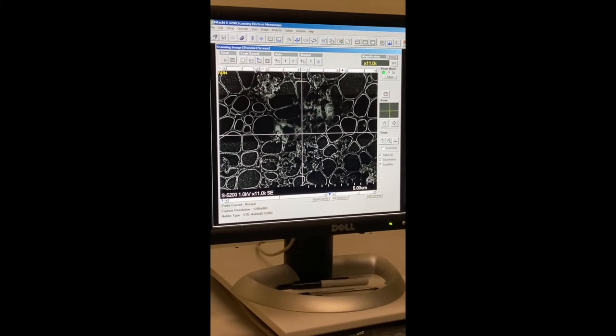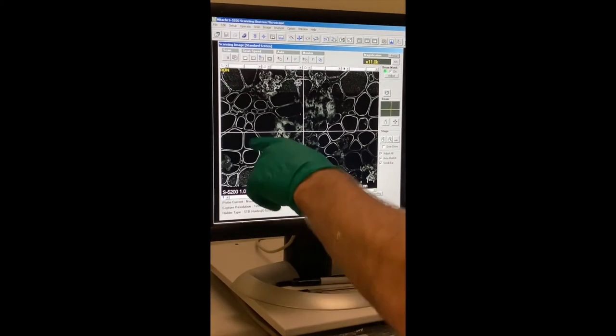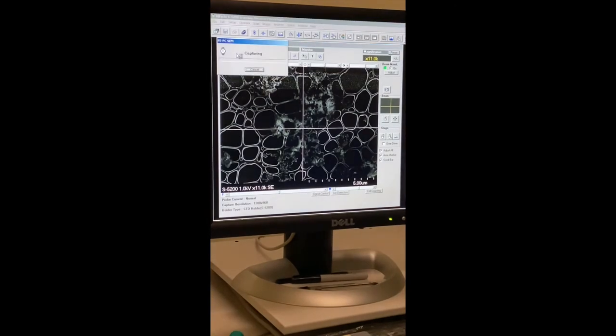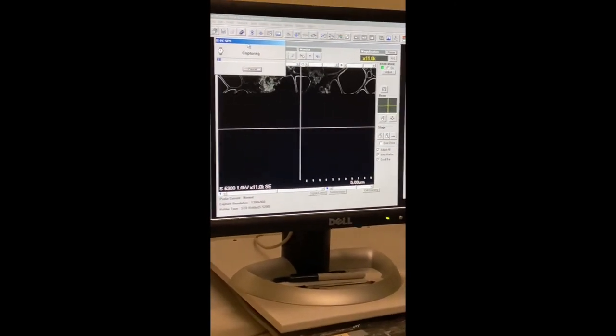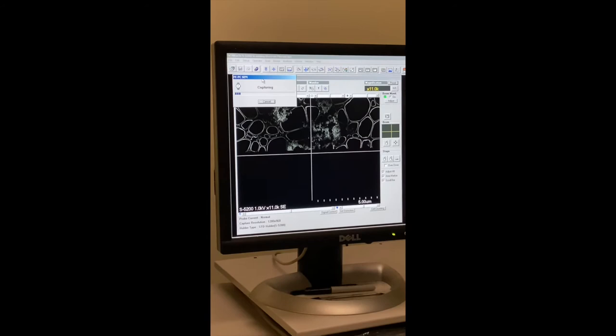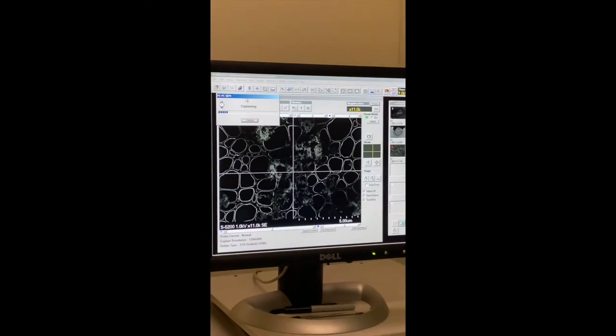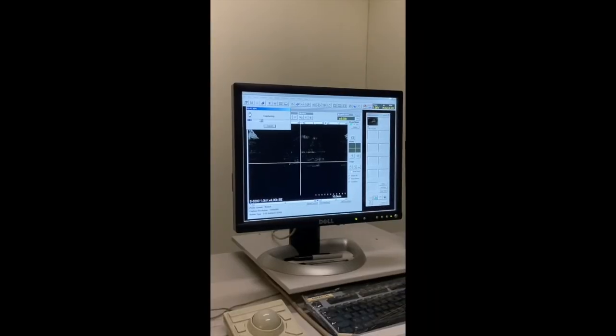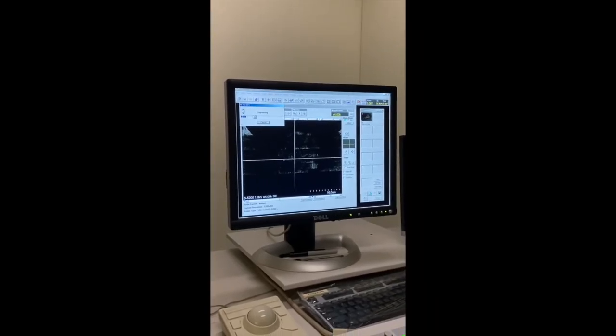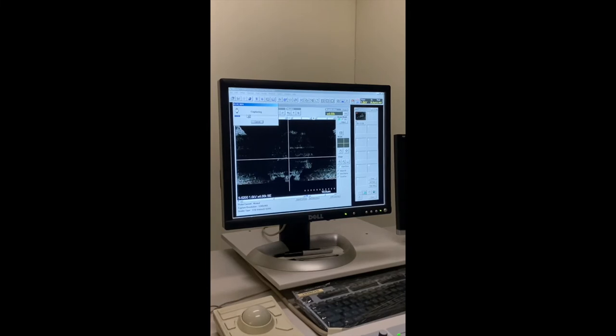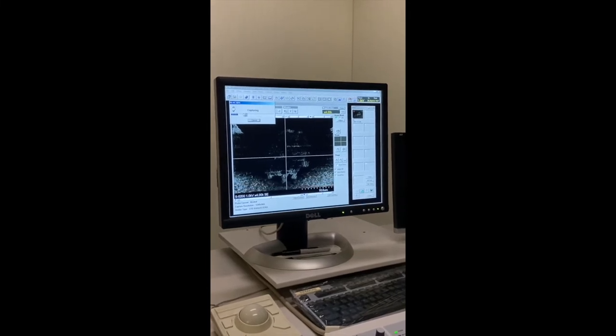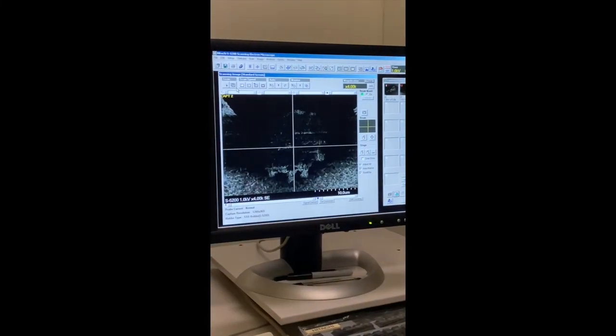And now that our sample is prepared and it's been loaded into the instrument and we've corrected for everything, we can finally take a picture. So let's do that. And what is this crappy image? So why, after all that work, did we get a crappy image?